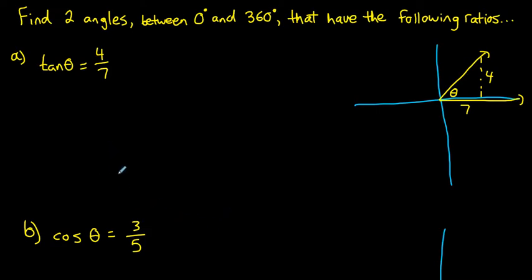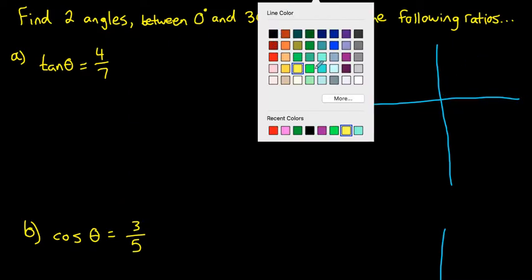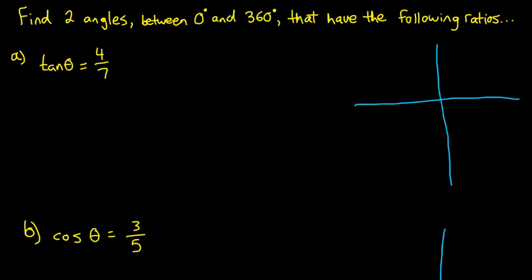There's another possible angle between 0 and 360 that you have to consider — an angle that is a related angle to the first one the calculator gives you. To find that second angle, you're going to have to remember your CAST rule. The CAST rule tells us that cosine is positive in the fourth quadrant, all ratios are positive in the first quadrant, sine is positive in the second quadrant, and tan is positive in the third quadrant.